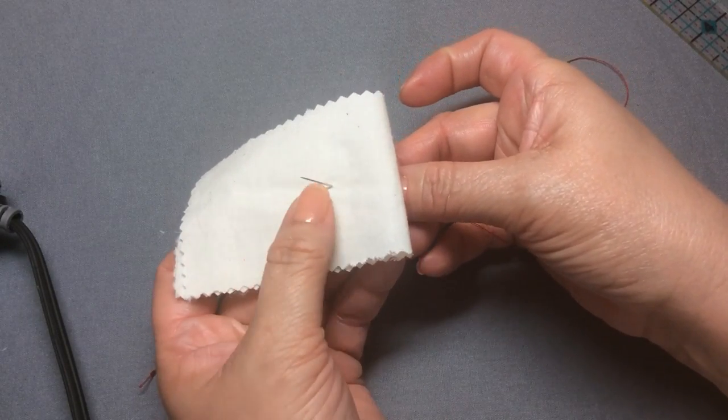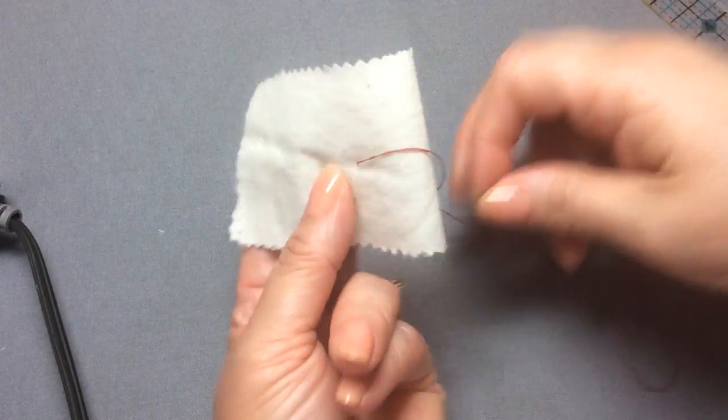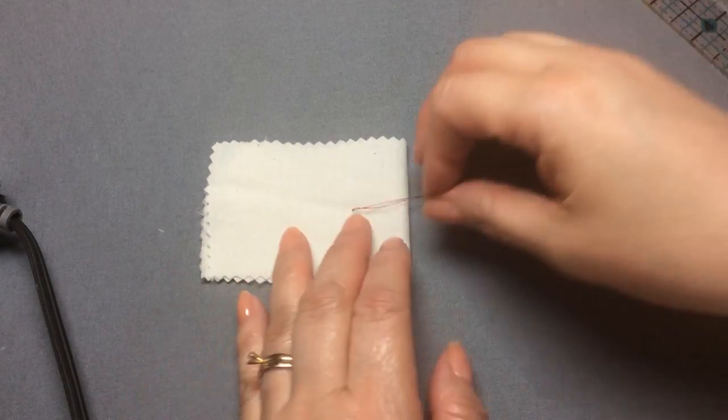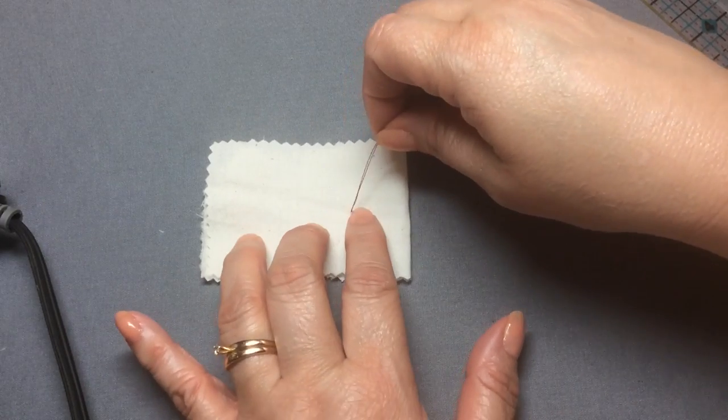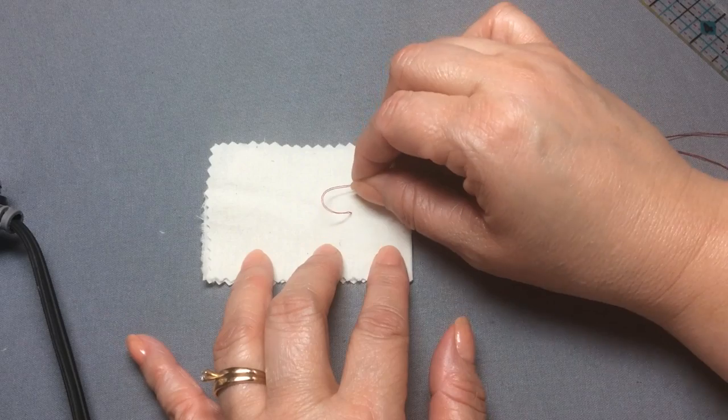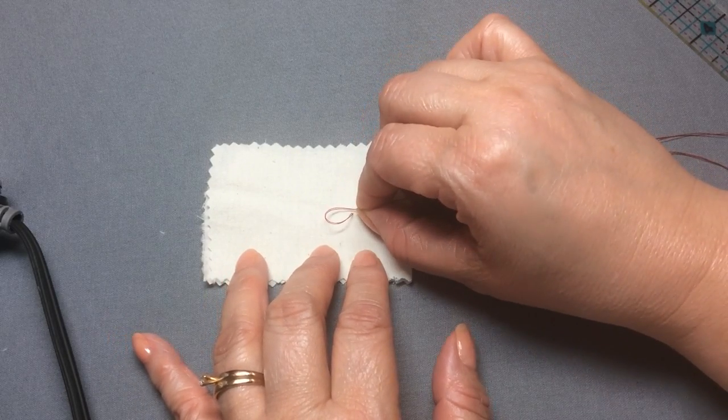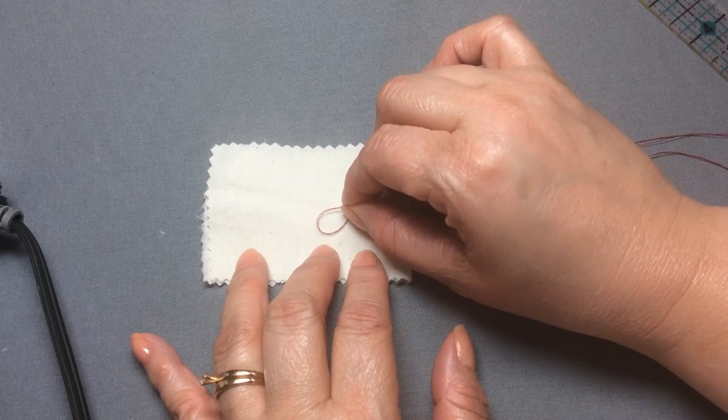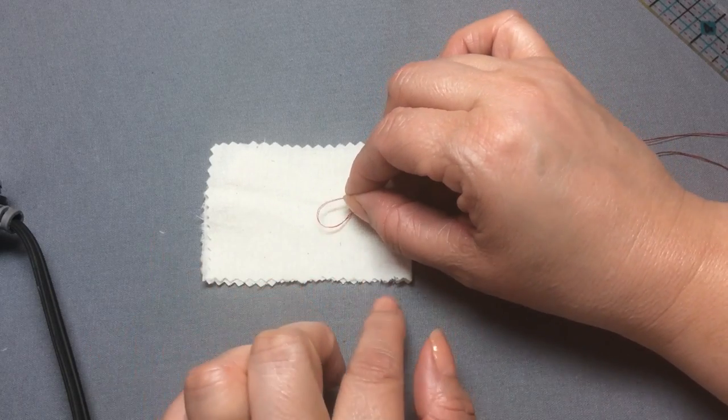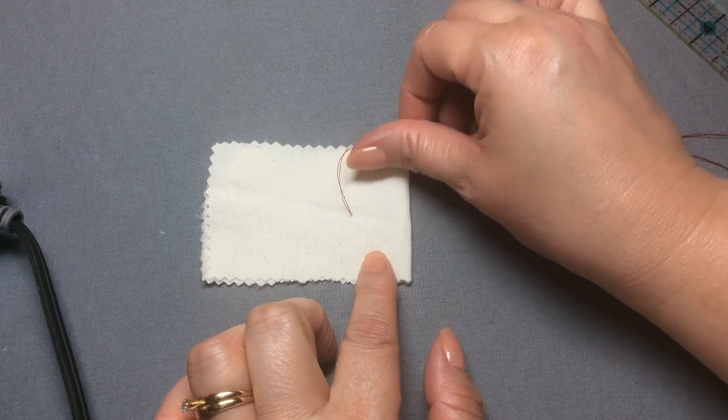I'm going to start my swing tack here. Now the thread loop, I say that interchangeably but I should say thread loop. This is good when you need a small loop to connect with a button, or maybe a little loop to put a belt through. Sometimes it can be like a bar instead of a loop.